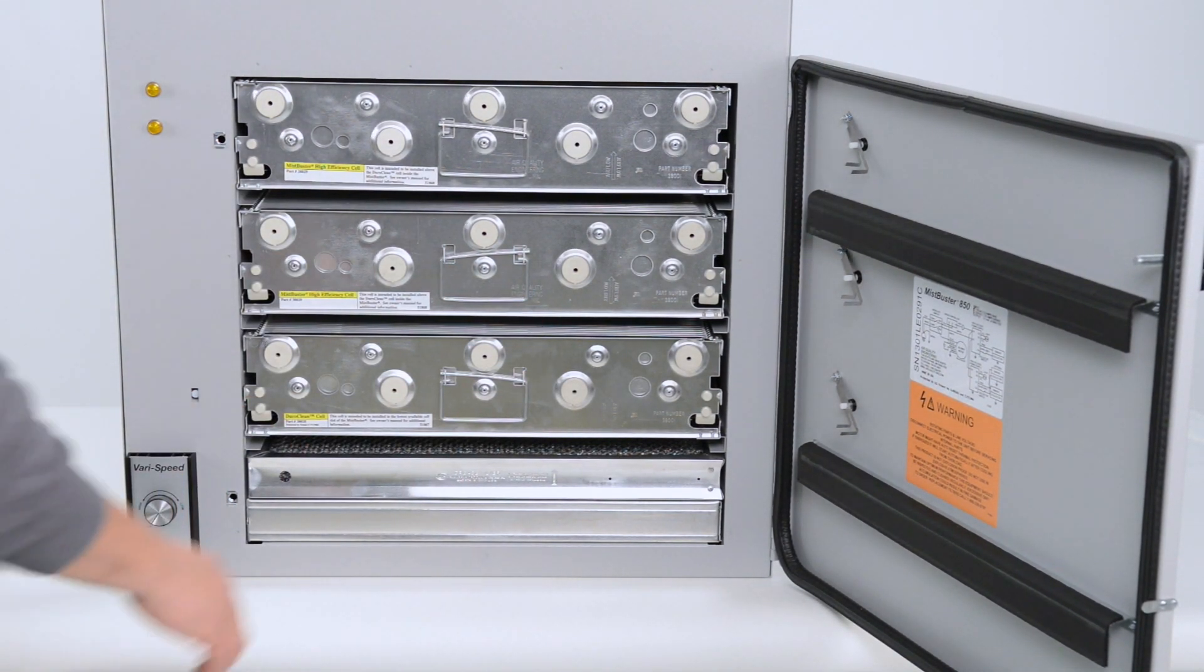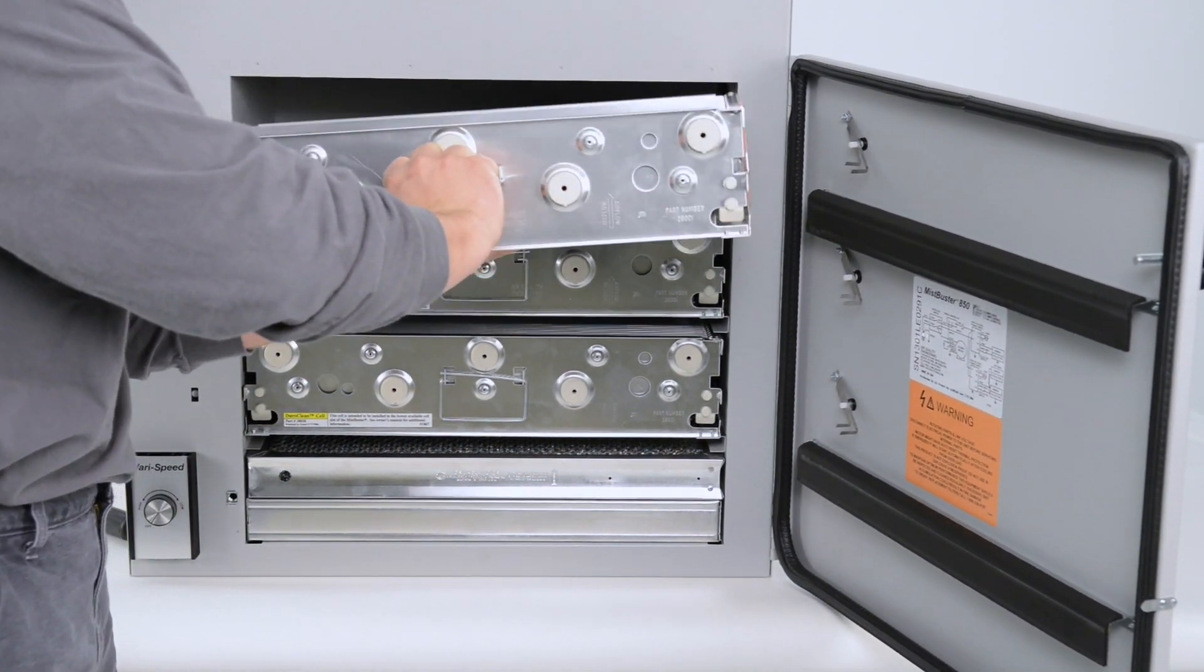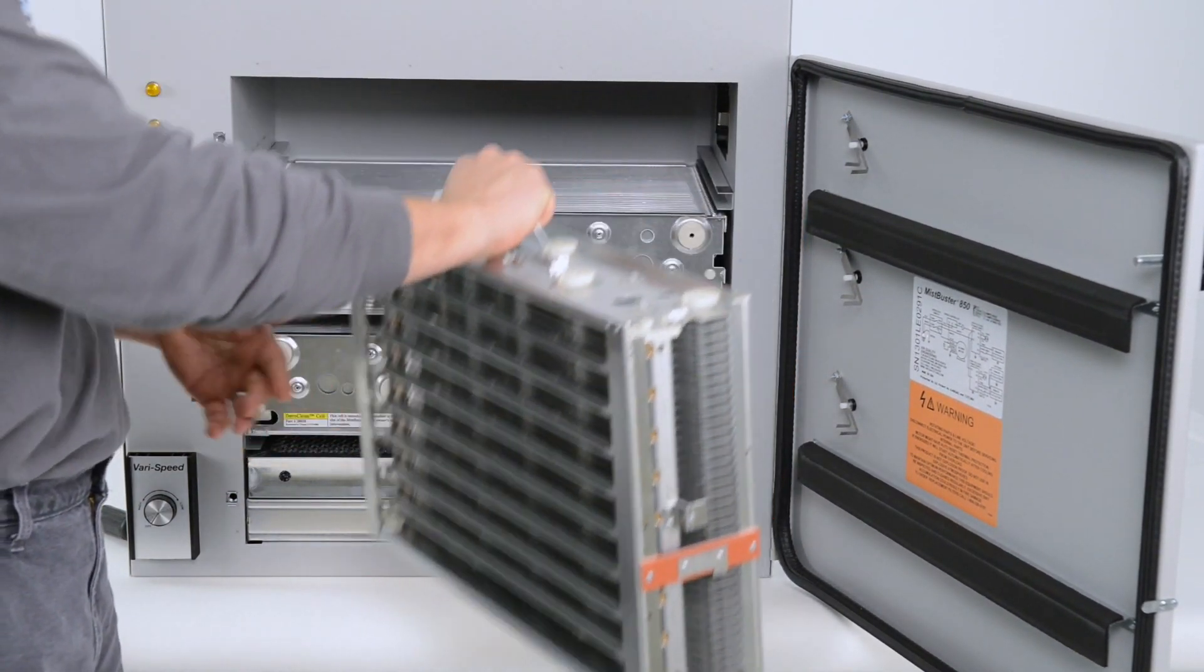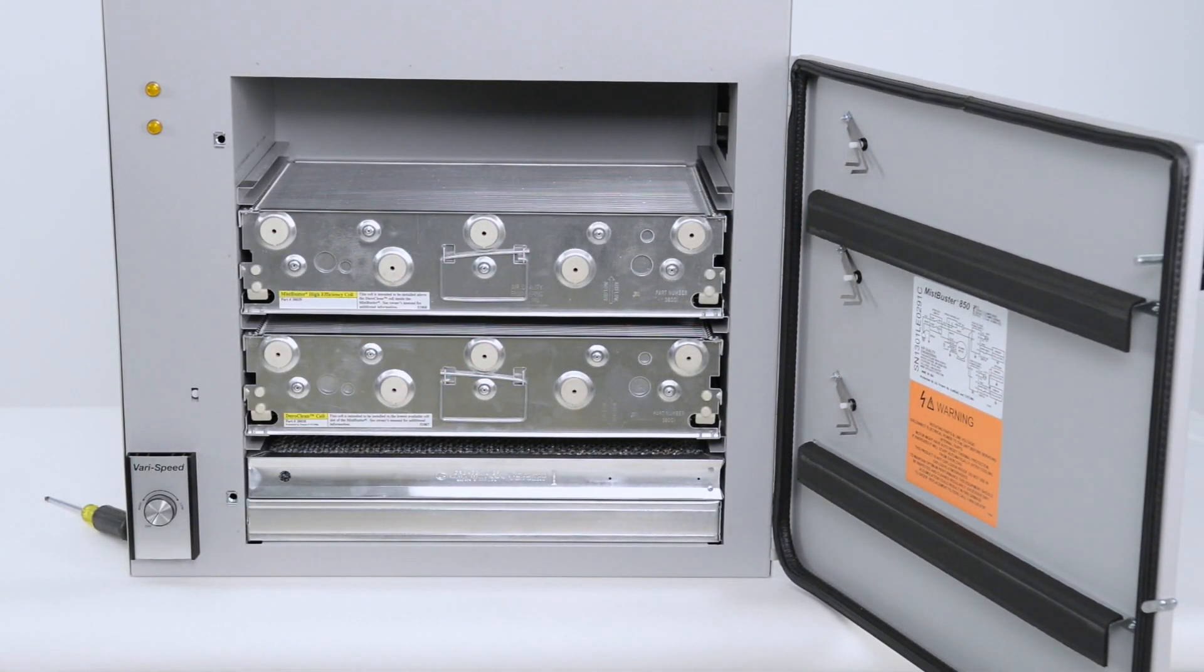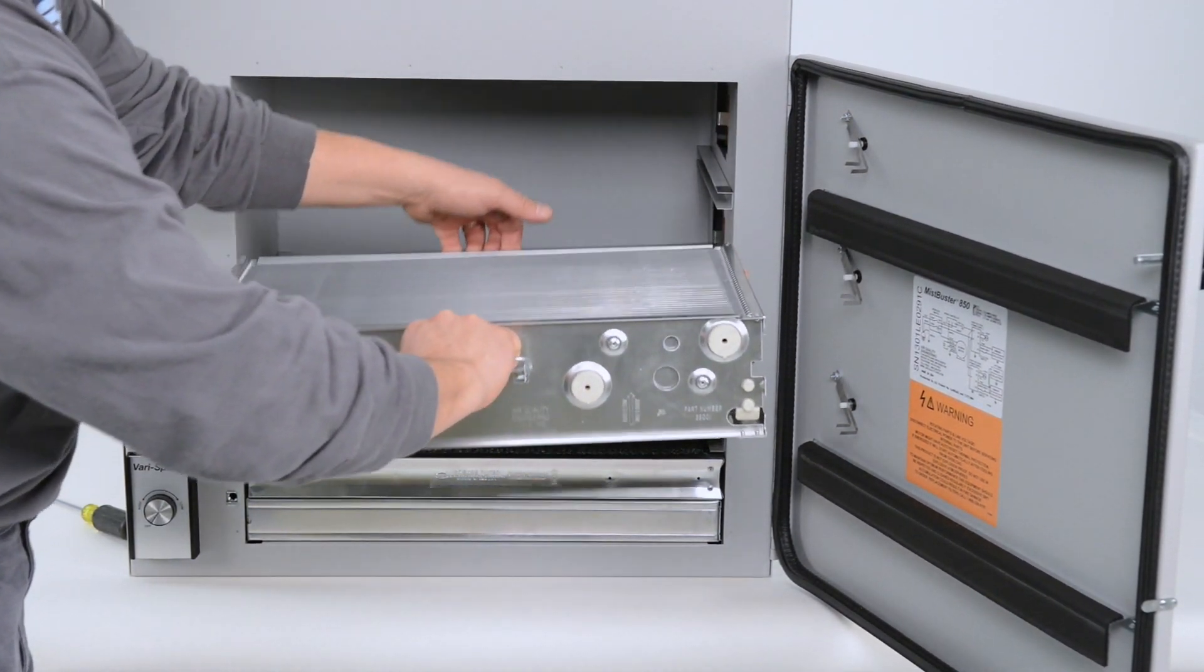The next step is to take the handle and slowly pull the cell out of the top tier first. Take the cell, put it down, and repeat this until all the cells are removed.